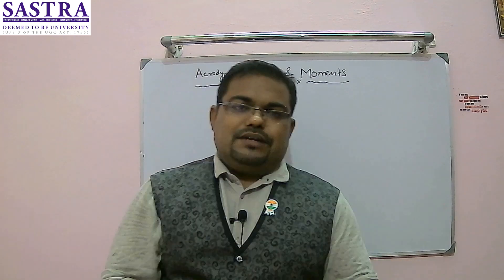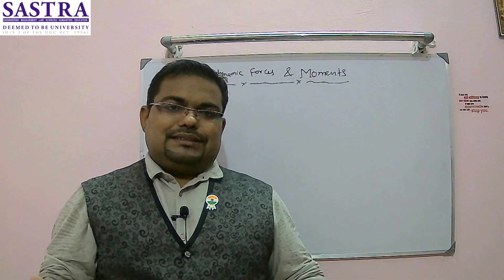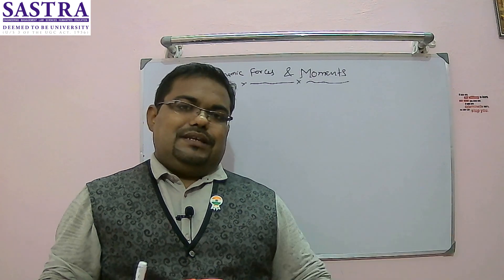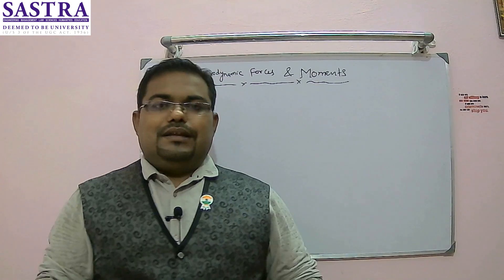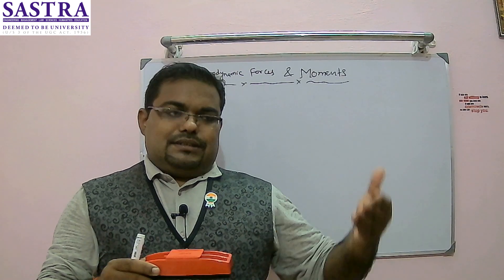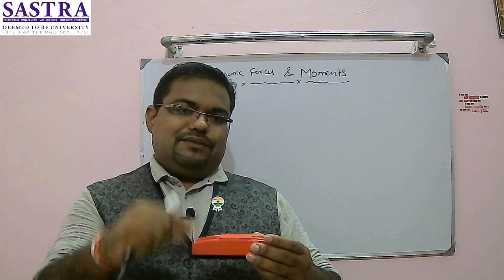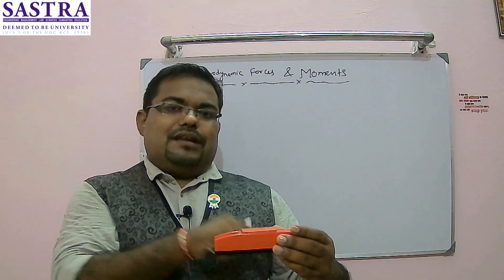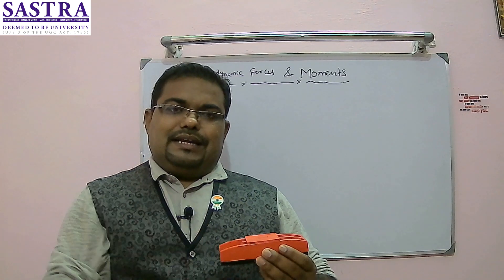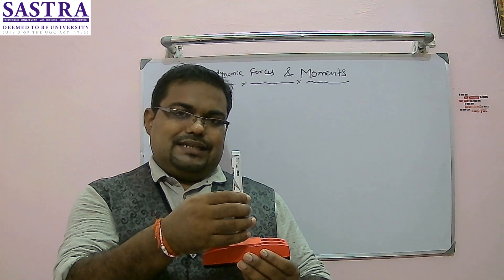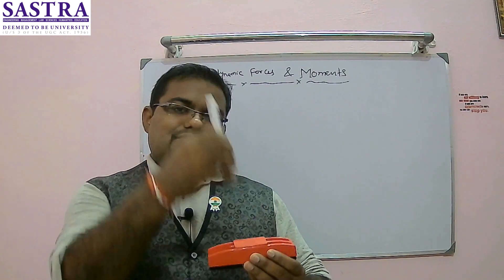The lateral axis is the imaginary line connecting one wingtip to the other, passing through the CG. The longitudinal and lateral axes are at 90 degrees to each other. The third is the normal axis — a vertical line perpendicular to both the lateral and longitudinal axes, passing through the CG. We have three axes, and along these three axes we have three motions, controlled by three moments.